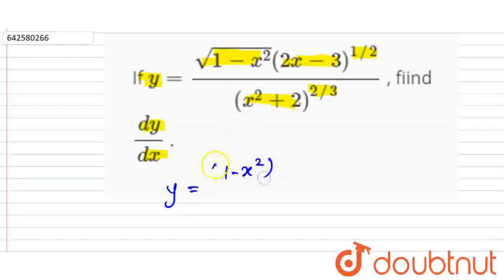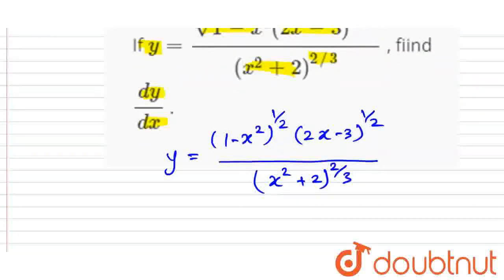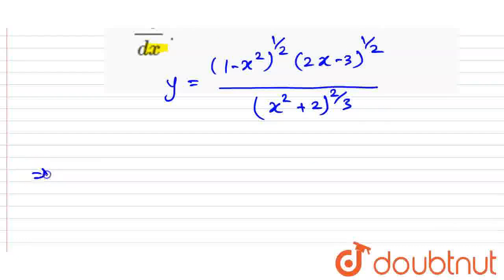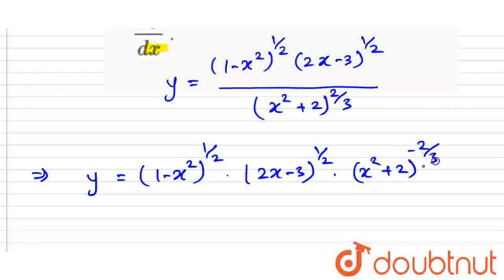We have the expression: 1 minus x squared to the power 1 by 2, into 2x minus 3 to the power 1 by 2, divided by x squared plus 2 to the power 2 by 3. We can write this as y equals to 1 minus x squared to the power 1 by 2, into 2x minus 3 to the power 1 by 2, into x squared plus 2 to the power minus 2 by 3.